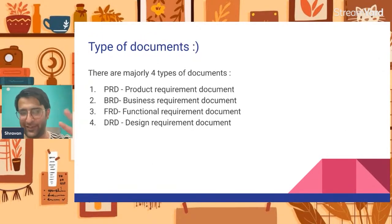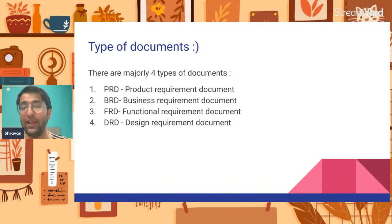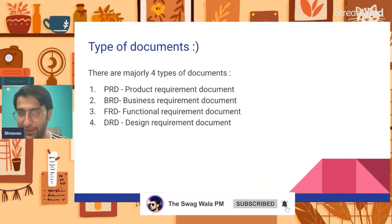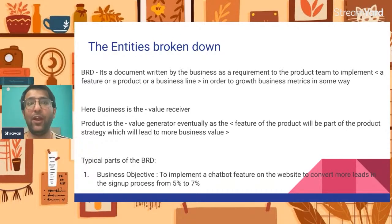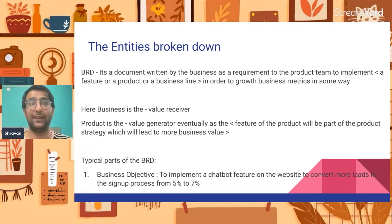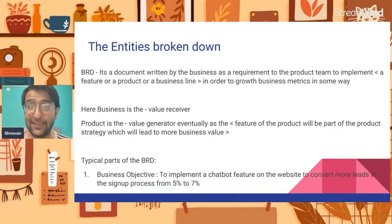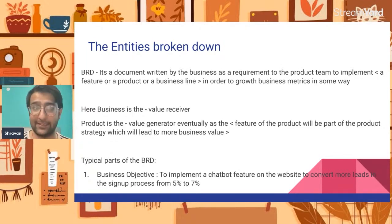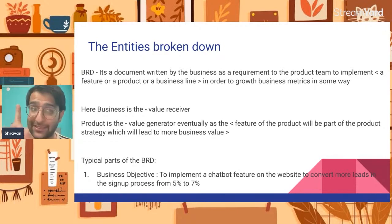There are four types of major documents: a Product Requirement Document, a Business Requirement Document, a Functional Requirement Document, and a Design Requirement Document. We will start with the Business Requirement Document. A business requirement document means that business requires something — it is a document written by the business guys so that they can implement a feature which propels the business equation of revenue minus cost equals profit.